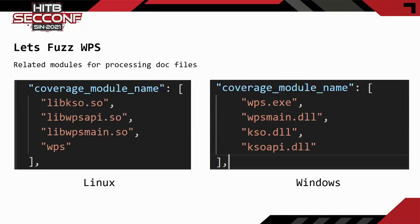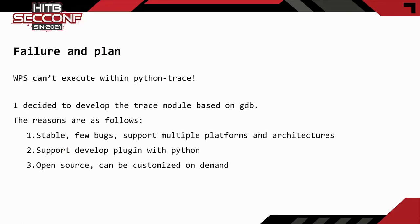This page shows the modules that need to be patched when WPS parses a .doc file on Windows and Linux platforms. When I started fuzzing, I found that Python Ptrace Tracer couldn't trace the WPS process — after WPS ran for a period of time, it would crash. I guessed that Python Ptrace may have some bugs in processing multi-threaded programs. After research, I found that GDB is an excellent debugger for Linux, so I decided to develop the trace module based on GDB.